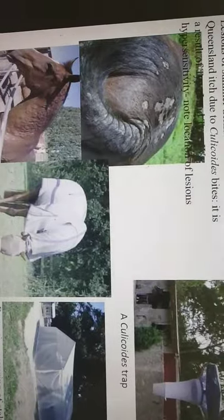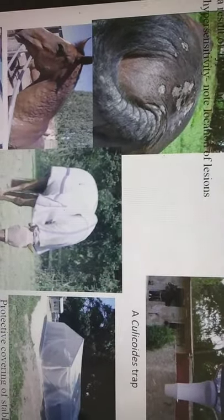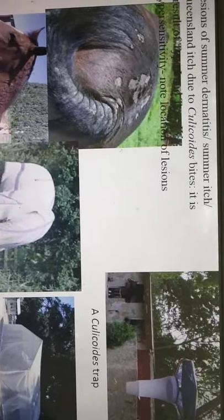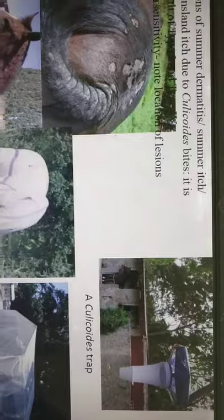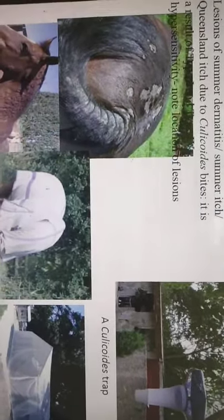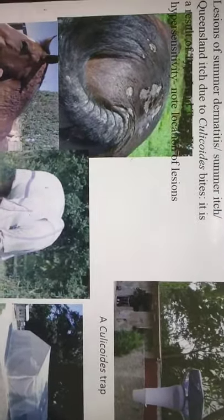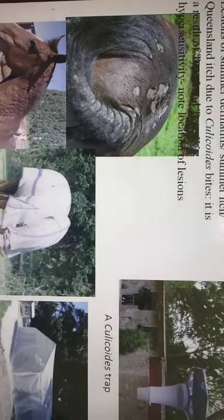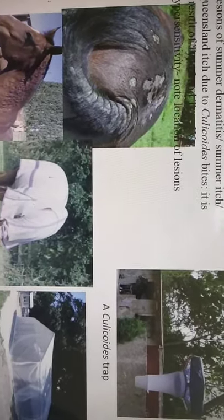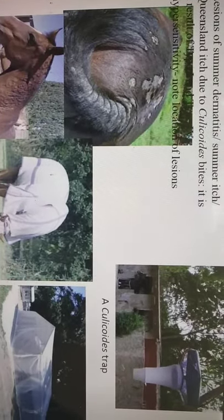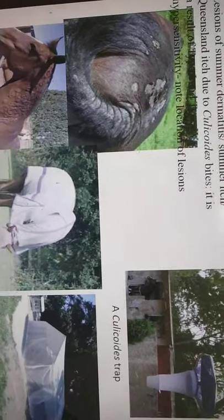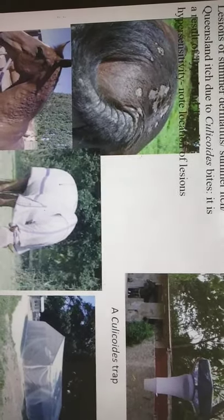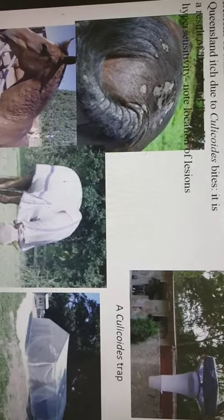Culicoides are very small — about three millimeters — and can cross through a normal mosquito net. Culicoides causes Queensland itch or summer dermatitis, mainly in horses in the Queensland region of Australia. You can see the lesions — this is a hypersensitivity reaction to the bite of Culicoides, specifically to its saliva. It consists of both Type 1 (immediate) and Type 4 (delayed) hypersensitivity reactions.